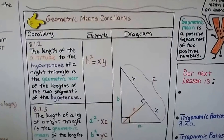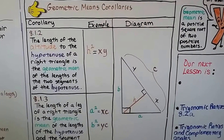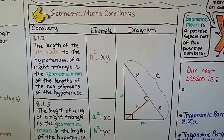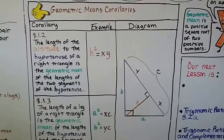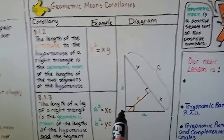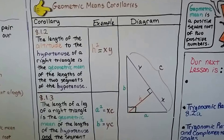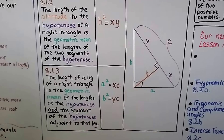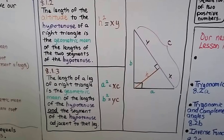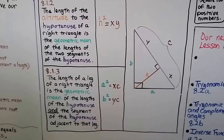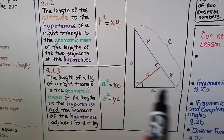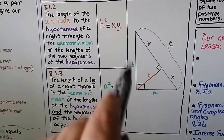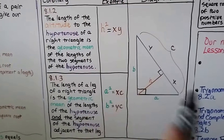Here are the geometric means corollaries. Corollary 8.1.2: the length of the altitude to the hypotenuse of a right triangle is the geometric mean of the lengths of the two segments of the hypotenuse — meaning H squared equals X times Y. Corollary 8.1.3: the length of a leg is the geometric mean of the hypotenuse and the segment of the hypotenuse adjacent to that leg — so A squared equals X times C, and B squared equals Y times C.